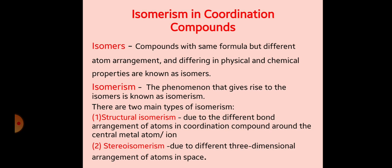For isomerism in coordination compounds, first of all we should discuss what are the isomers. The compounds with the same formula but different atom arrangements, differing in physical and chemical properties, are known as isomers. The structure is different and because of that, the physical and chemical properties also change. We call these compounds isomers. The phenomenon that gives rise to isomers is known as isomerism.